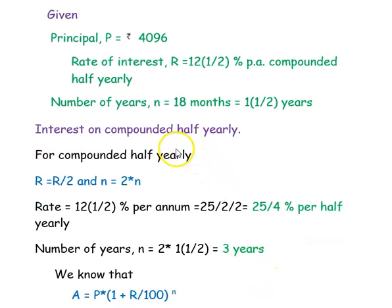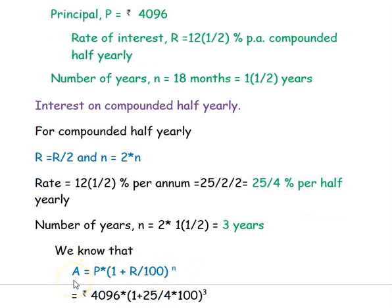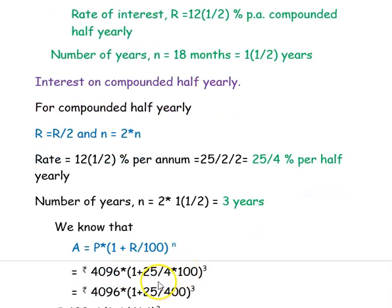Now we know all the values. The compound interest formula is A = P × (1 + R/100)^N. We know P is Rs. 4096, R is 25/4, and N is 3. We can directly substitute in the formula. So, A = 4096 × (1 + 25/(4 × 100))^3.